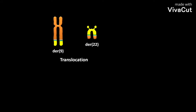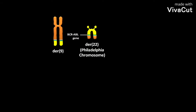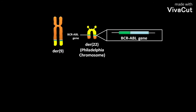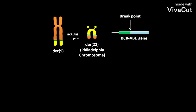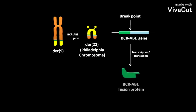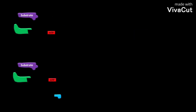The der22 chromosome is called the Philadelphia chromosome. It contains the BCR-ABL gene. If we take a closer look at the BCR-ABL gene, we can find a break point. This BCR-ABL gene undergoes transcription and translation to produce the BCR-ABL fusion protein, which is a protein kinase.